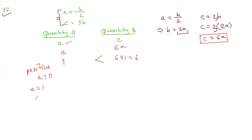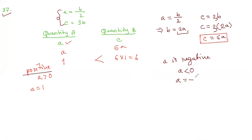Now let's check another possibility — suppose A is negative, meaning A is less than 0. Let's take A equals minus 1. Then quantity A equals minus 1 and quantity B equals 6 times minus 1, which is minus 6. Since minus 6 is smaller than minus 1, quantity A is greater than quantity B.